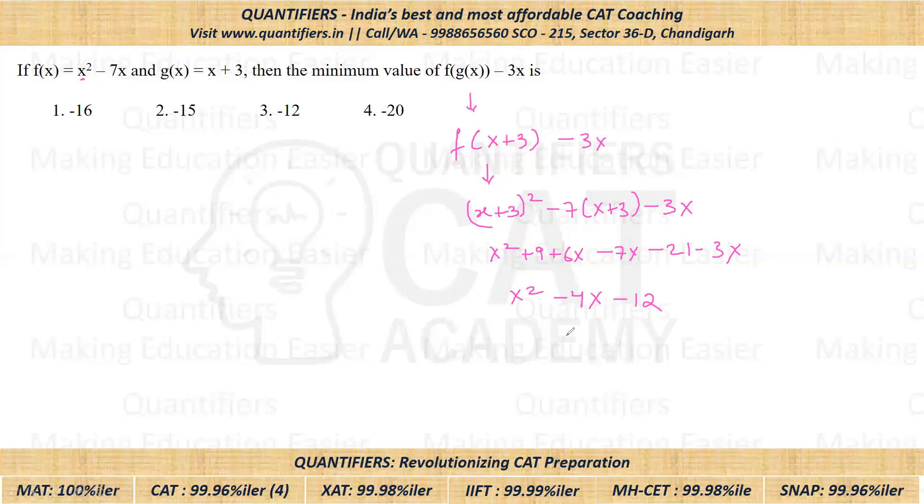Minimum value would be minus D by 4A. I hope all of you are aware of this. Minus D by 4A will directly give you the answer, or you can differentiate it and find the value of X and put it back in the equation.